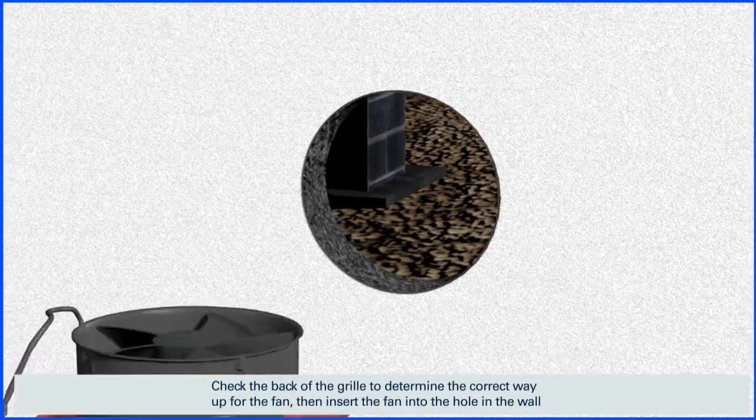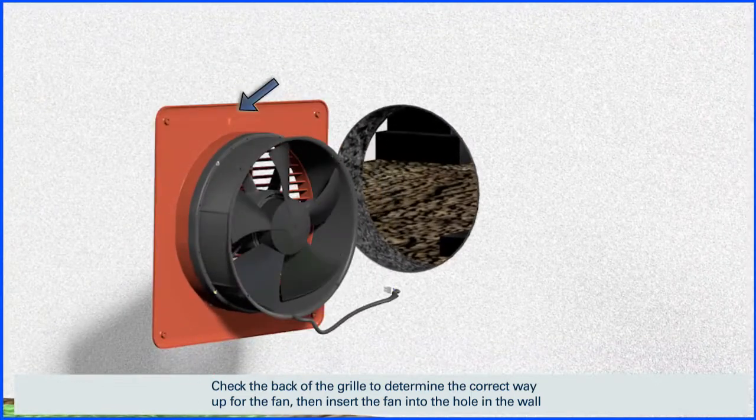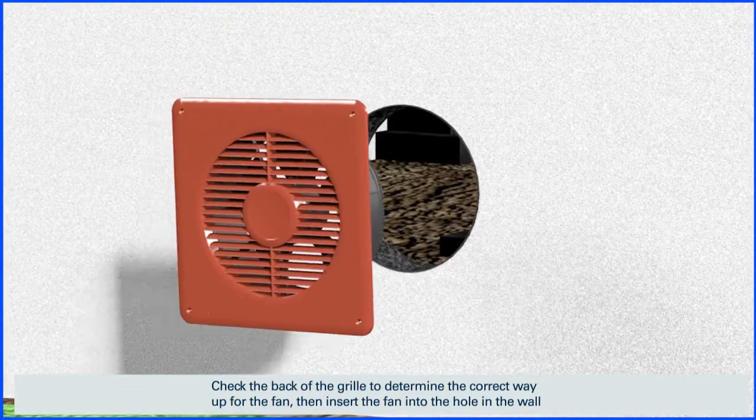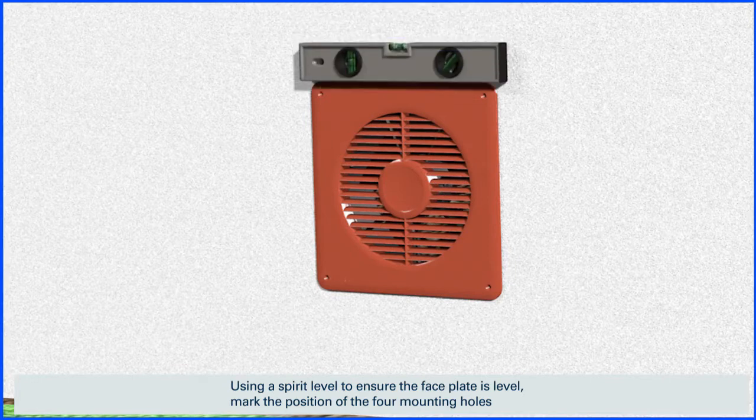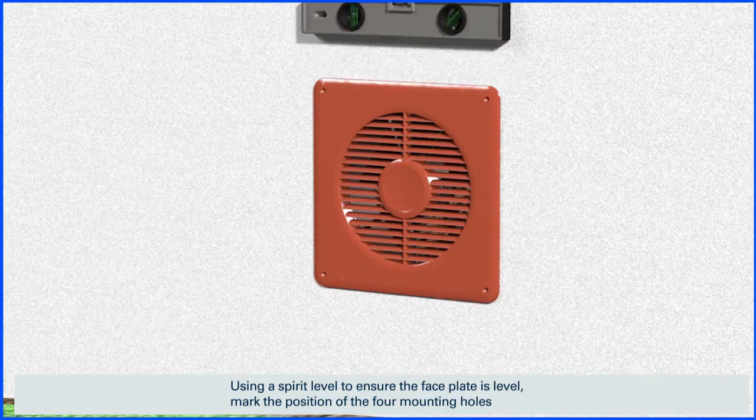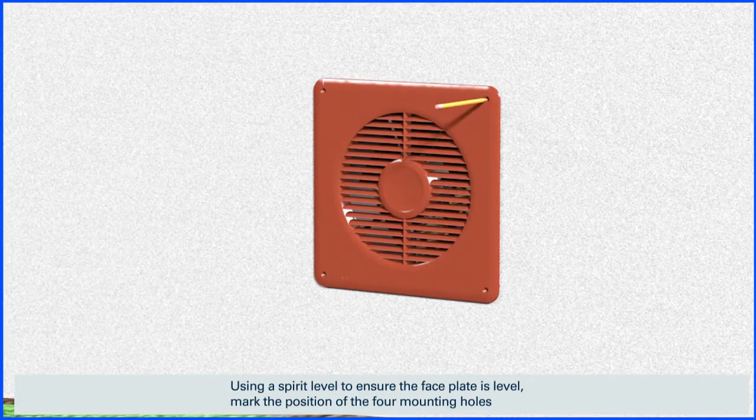Check the back of the grill to determine the correct way up for the fan, then insert the fan into the hole in the wall. Using a spirit level to ensure the face plate is level, mark the position of the four mounting holes.